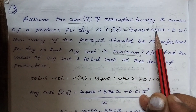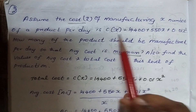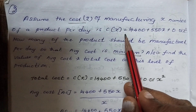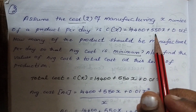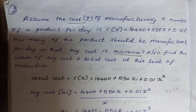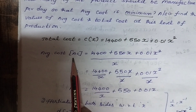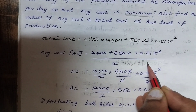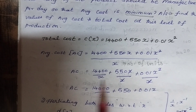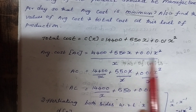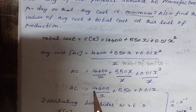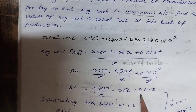The cost function is C(x) = 14,400 + 550x + 0.01x². This is the total cost for manufacturing x number of units. Average cost is the cost per unit, which equals total cost divided by number of units. So average cost AC = 14,400/x + 550 + 0.01x.